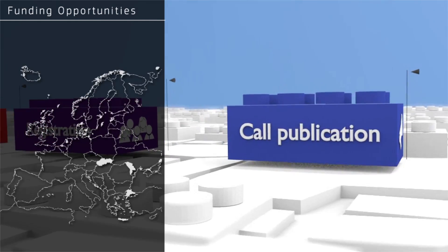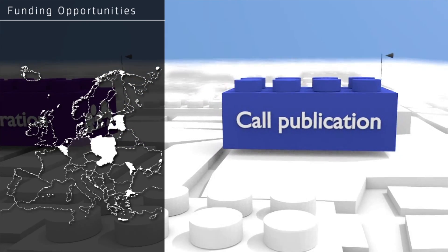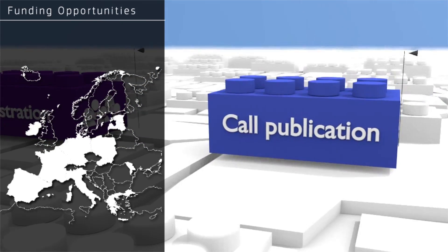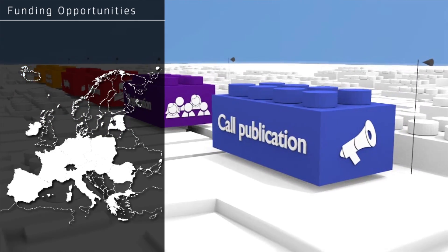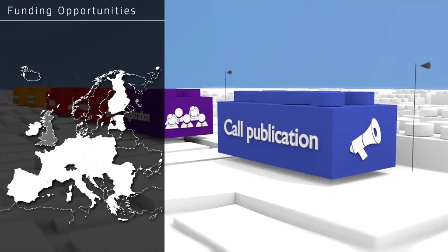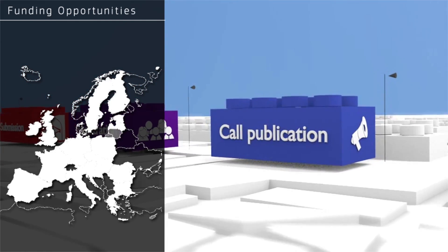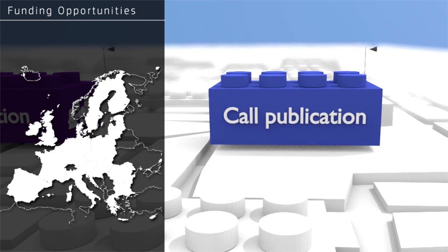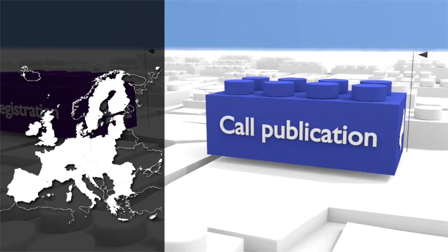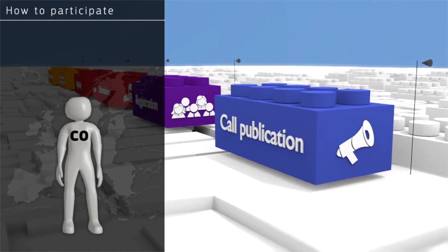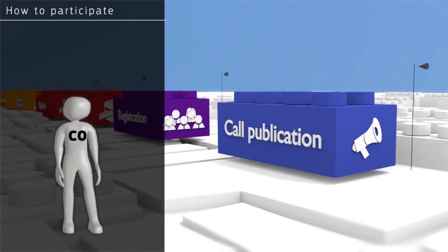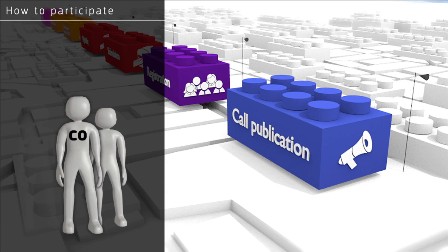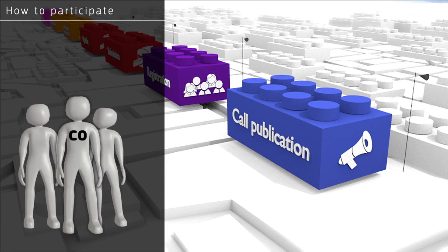The EU's definition of a consortium is a group of participants, usually from more than one EU member state or associated country, who choose to work together on a research project. The invisible bonds forged by cooperation can act as the cement which helps to make the union stronger. A consortium consists of a coordinator who will take the lead, and other participants who cooperate to carry out the work described in the proposal.